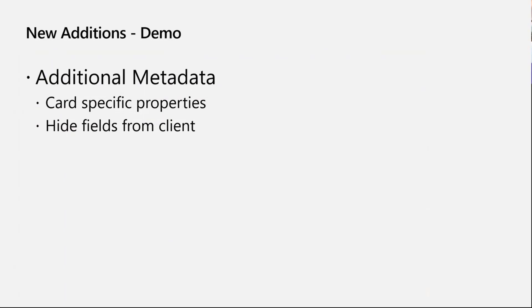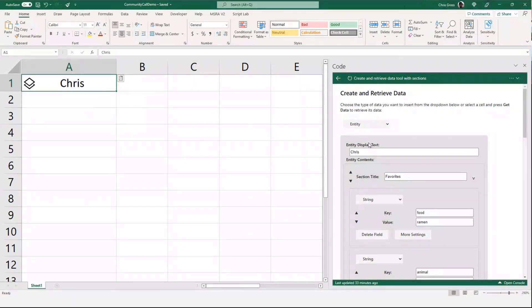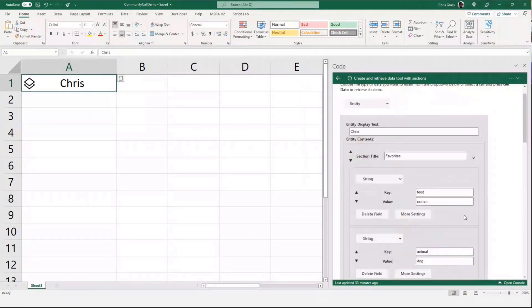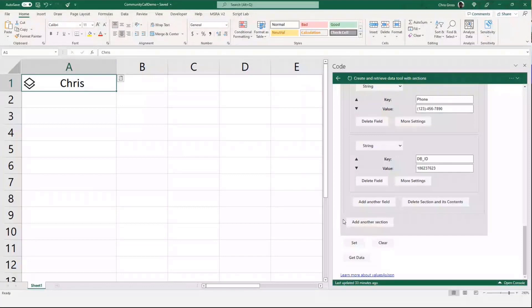The last thing I'm going to cover today is a quick demo. We've added additional metadata to data types — I'll show you how we've added card-specific properties. You might have noticed the card layouts don't look like some others, for example on the Wolfram side. There's also the ability to hide individual fields from the client. I'm flipping over to Excel where I have a pre-curated demo, using a tool we've built that allows me to set and clear data types and look at all the information contained and modify it.